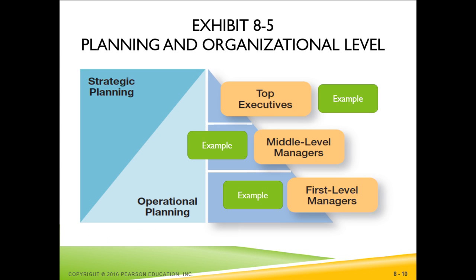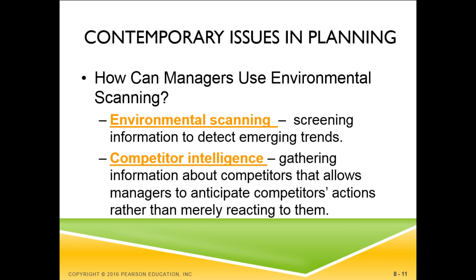Exhibit 8-5 shows the relationship between a manager's level in the organization and the type of planning done. For the most part, lower-level managers do operational planning while upper-level managers do strategic planning. Both types of people are critical for the success of an organization, and few people have the skills to do both. A manager's ability to analyze the external environment may be improved by environmental scanning, which involves screening information to detect emerging trends. One of the fastest-growing forms is competitive intelligence — gathering information about competitors that allows managers to anticipate their competitors' actions rather than merely reacting to them. It seeks basic information: who are they, what are they doing, and how will they be affecting us?